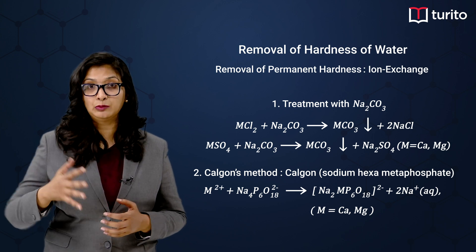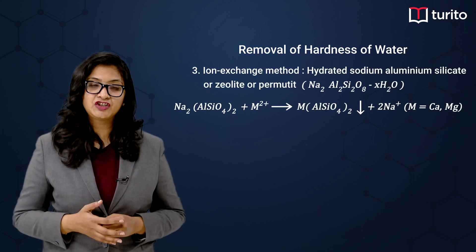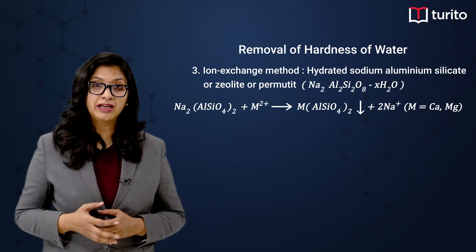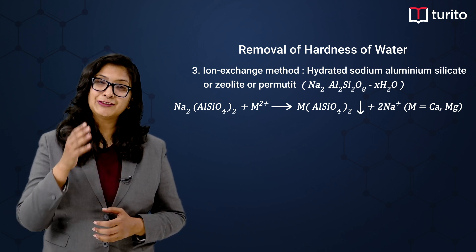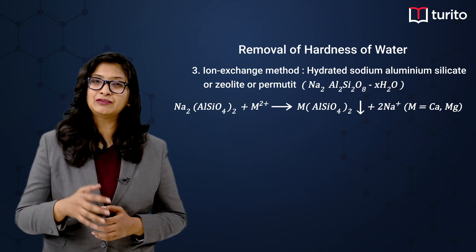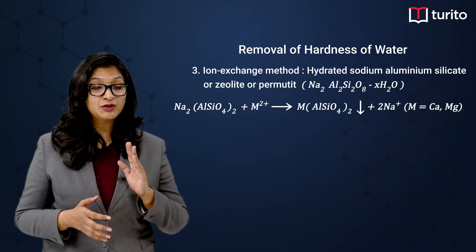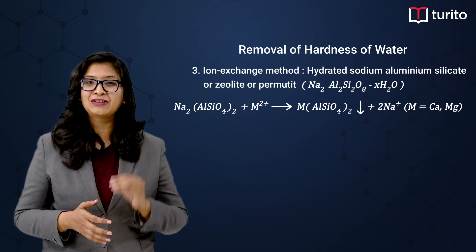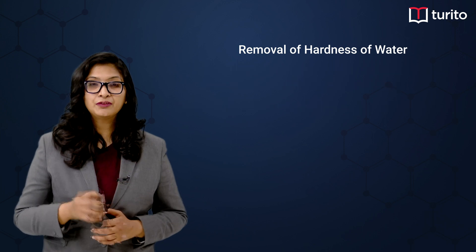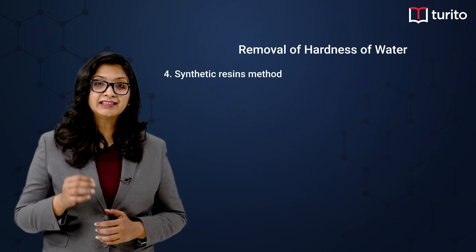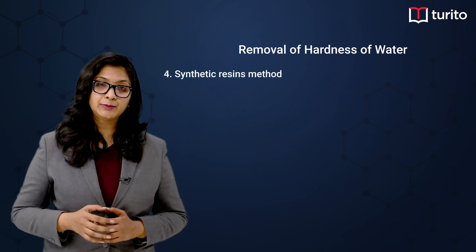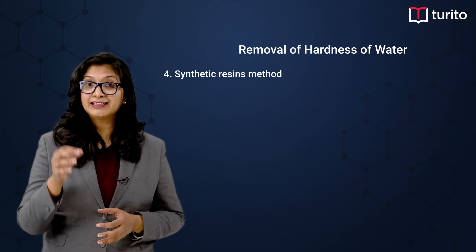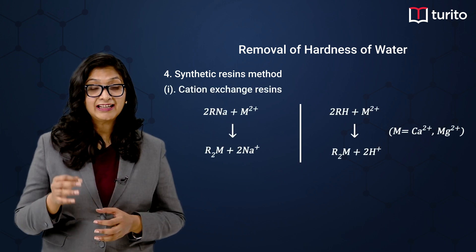Next is the ion exchange method, in which we use zeolites. In zeolite also, there is sodium present which will be exchanged with the magnesium and calcium in the water. Next is the synthetic resins method, which has two different sub-methods: the first one is cationic exchange.